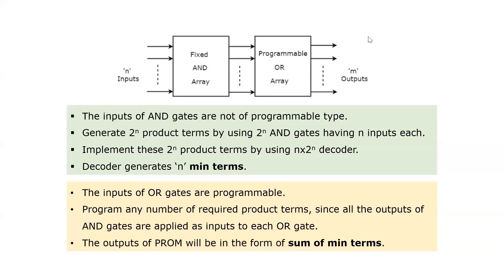The next one is the programmable OR array. In this, the inputs of OR gates are programmable. We can program any number of required product terms, since all the outputs of AND gates are applied as inputs to each OR gate. So we can program any number of inputs obtained from the fixed AND array. Since all the outputs of AND gates — the minterms — are applied as inputs to each OR gate, after applying these AND gate outputs to this programmable OR array, we will get the outputs in the form of sum of minterms.